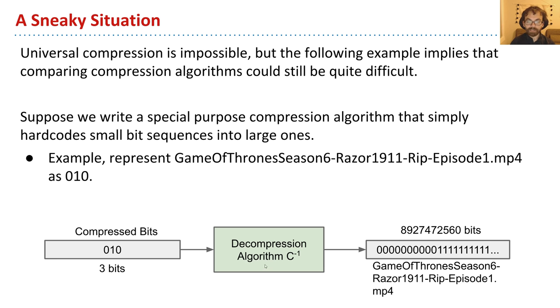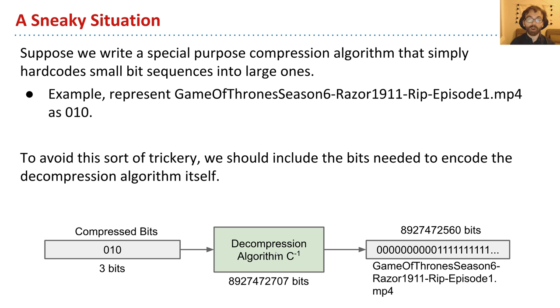So the cheating that we're doing here is that we're not taking into account the actual cost in space of the decompression algorithm itself. So if we are being more honest with ourselves, we should include the bits needed to encode the decompression algorithm itself. That is, the Java code, or whatever language, needed to do this decompression. That's an important point. And for this reason, we're going to need to change our model.